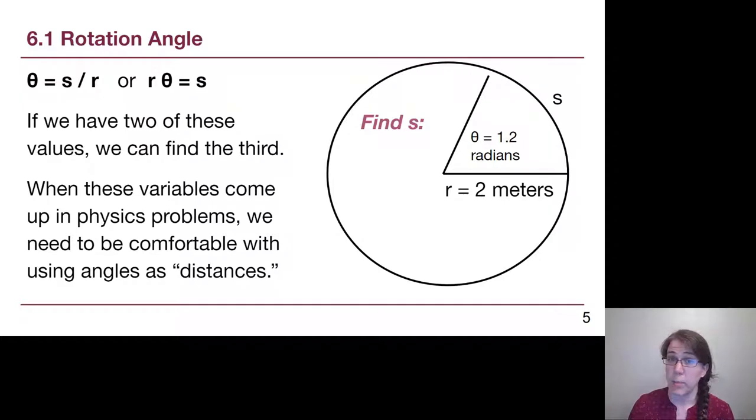Here's another example. This is helping us to understand that as long as we have any two of the three values - R, theta, and S - we can use this relationship between them to find the third. If we have a radius of 2 meters and an angular distance of 1.2 radians, what would the arc length be?